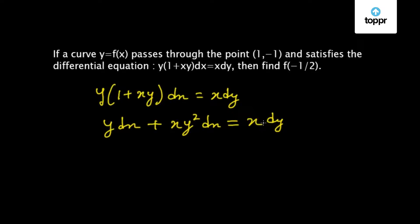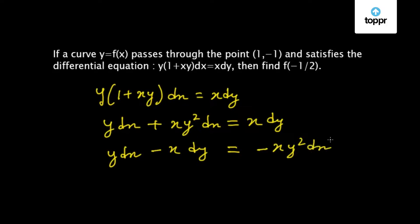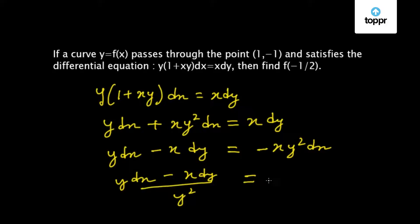Now let us take x dy to the left hand side and xy² dx to the right hand side. So we will get y dx minus x dy = minus xy² dx. Now let us take y² to the left hand side, so we will get (y dx minus x dy) / y² = minus x dx.